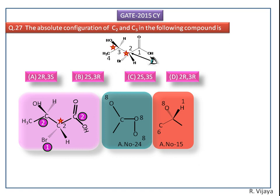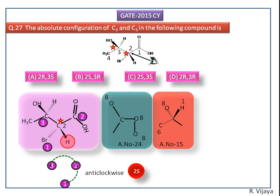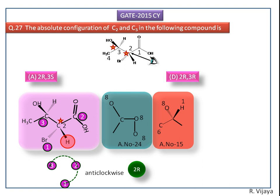Comparing these two, the right side carbon atom has the higher priority than the left side carbon atom. Now this higher priority rotates in an anti-clockwise direction, so the configuration is supposed to be 2S. But here the least priority hydrogen is towards the observer, so we have to change the configuration — that is 2R.